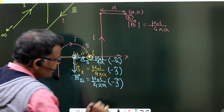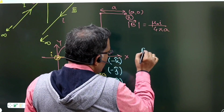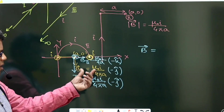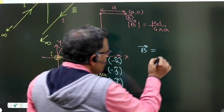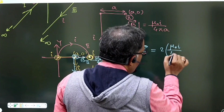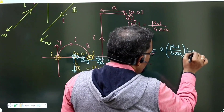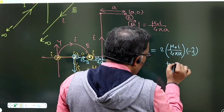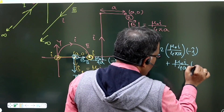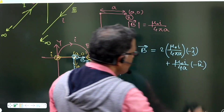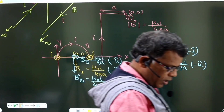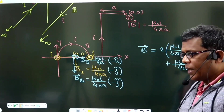So the magnetic field due to section 3, B₃, will again be equal to μ₀i/4πa in the minus ĵ direction. The net magnetic field total: two of them are equal in value and same in direction, so I can write it as twice of μ₀i/4πa along negative z-axis. This is the total or net magnetic field due to this particular arrangement.